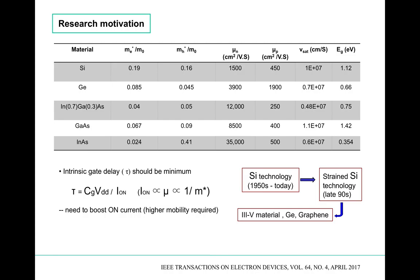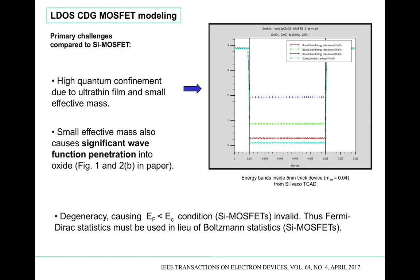The on-current is proportional to mobility, which is inversely proportional to the effective mass. So if we choose a material with low effective mass — as seen from the table, mainstream silicon has much higher effective mass than III-V materials and germanium — these materials give us that property, thereby allowing us to increase the on-current.